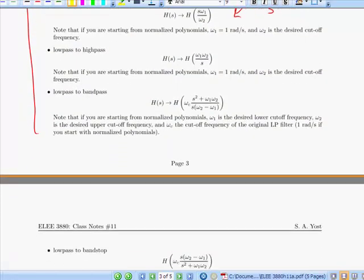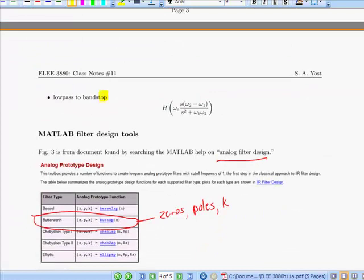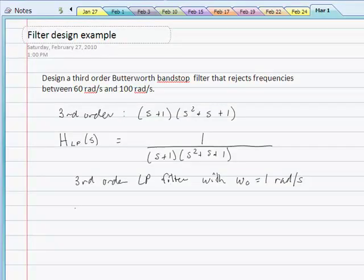So we're doing low-pass to bandstop. So that's what this formula right here does. What we want to do is take H of s in our low-pass filter and make it so H of s equals H low-pass of s...